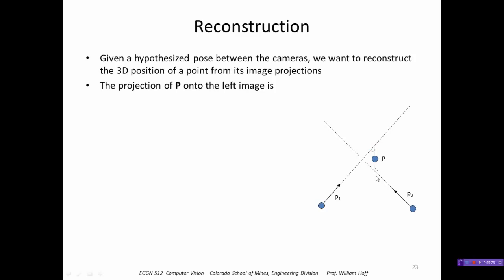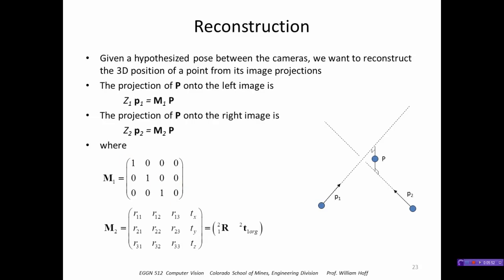So the projection of P onto the left image is given by multiplying M1 times P, and on the right image is M2 times P, where M1 is just this 3 by 4 matrix that extracts the rotation and translation of view 2 with respect to view 1.